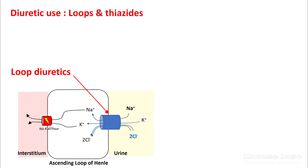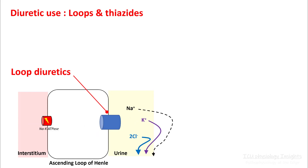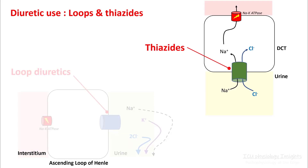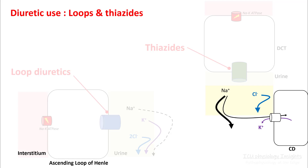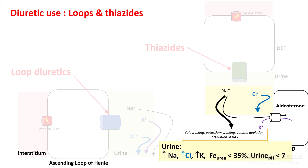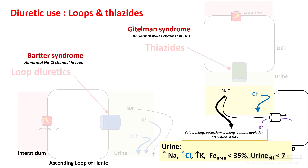Loop diuretics such as furosemide inhibit the sodium-potassium-2-chloride channel, resulting in sodium, potassium, and chloride loss. Similarly, thiazides in the distal convoluted tubule inhibit sodium and chloride channels, resulting in sodium and chloride loss. When urine rich in sodium and chloride reaches the collecting duct, the aldosterone pathway has already been stimulated because of volume loss, resulting in some reabsorption of sodium and further loss of potassium. So urine sodium, potassium, and chloride will be very high. FEurea will be less than 35% and urine pH would be less than 7. Patients with Gitelman syndrome and Bartter syndrome have abnormal sodium chloride channels and these patients would appear as if they were taking diuretics.